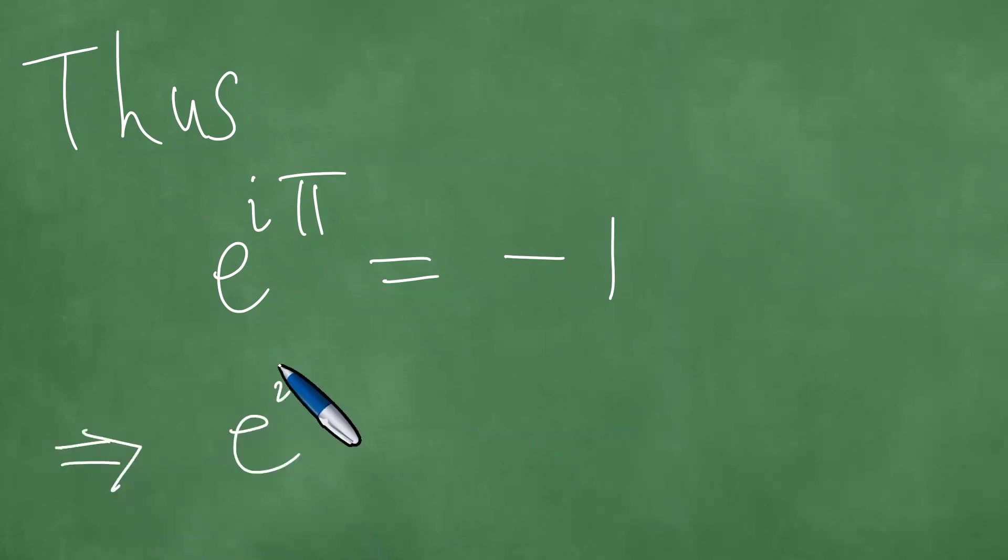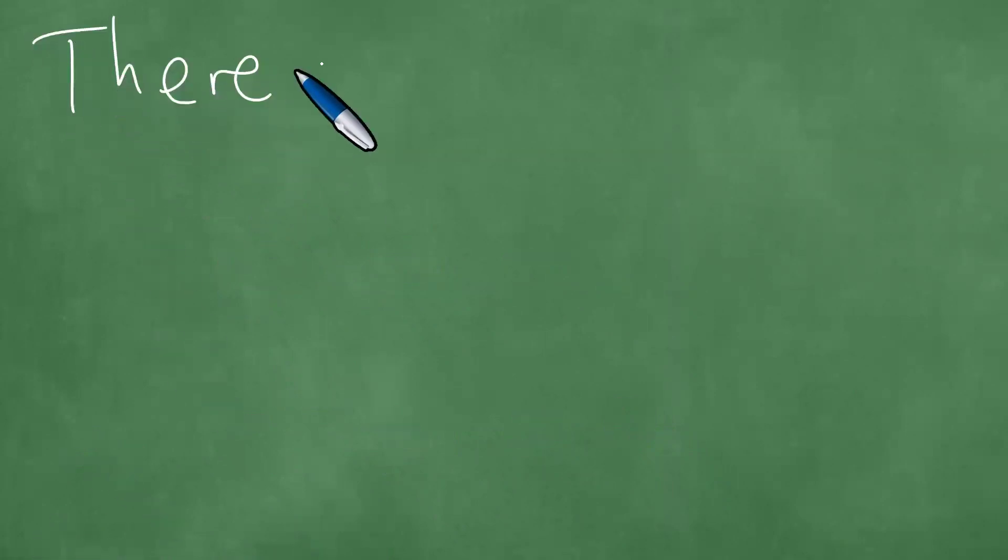That's e to the i pi is equal to minus one. And this equation can also be written as e to the i pi plus one equals zero, and credit is given to Euler.